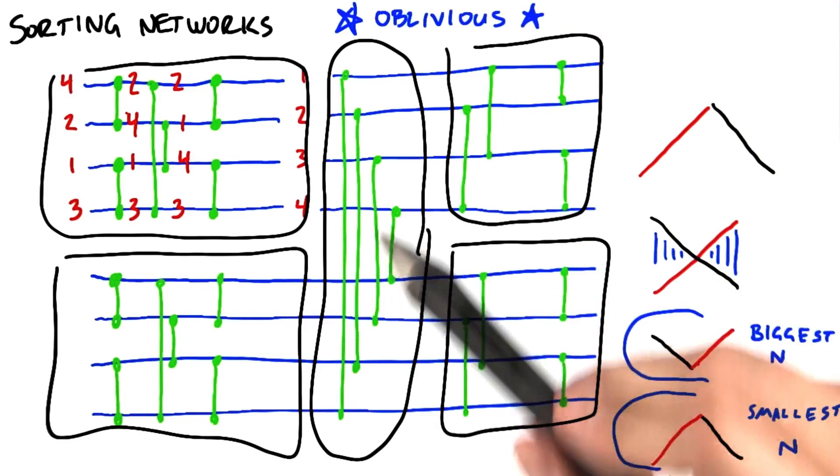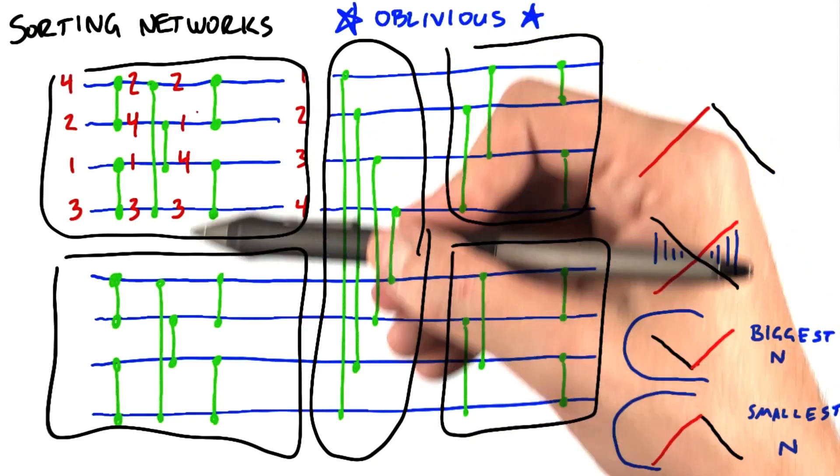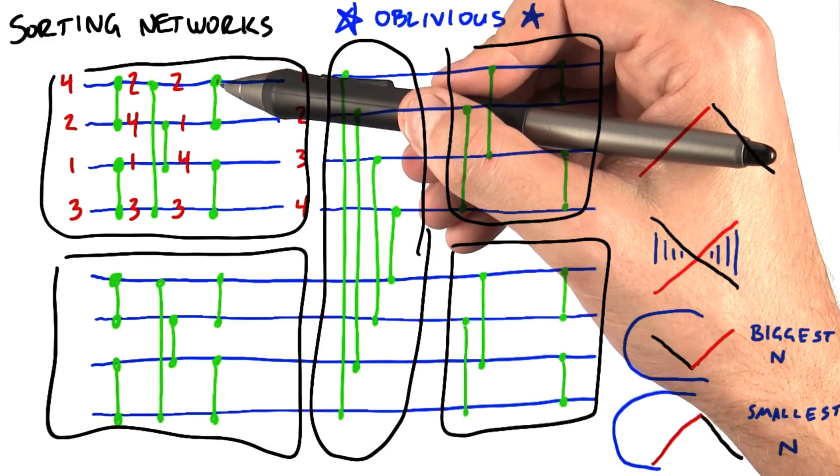So how do we implement this on the GPU? Well, it's very simple. We're going to assign one thread per input element. In this case, eight input elements.